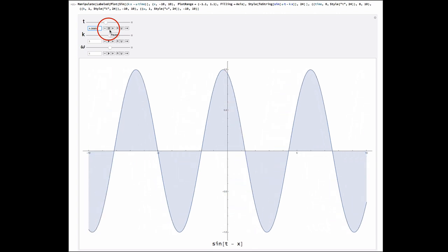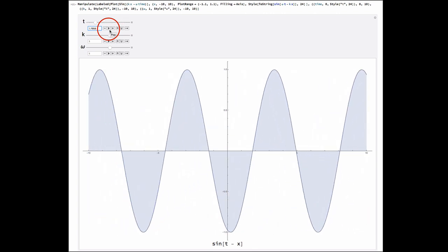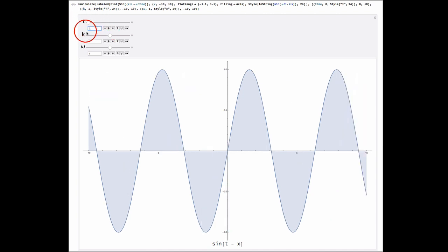If we roll time forwards, then we see the wave moving forwards. Which is great, that's what we want the wave to do. What happens if we change k? Time back to 0 and make k a factor of 3 larger.